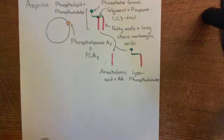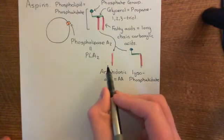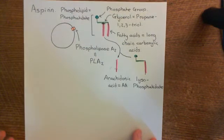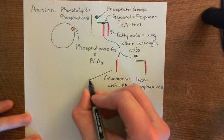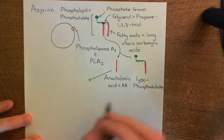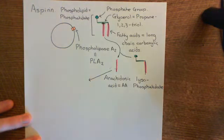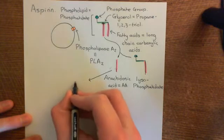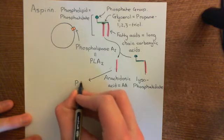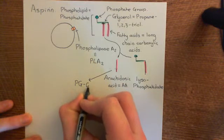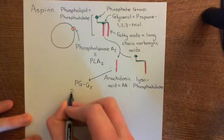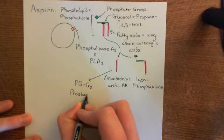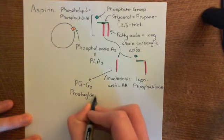Inside the platelets, arachidonic acid is going to be used to make thromboxane A2. What's first going to happen is that an enzyme known as cyclooxygenase is going to act on arachidonic acid. Cyclooxygenase enzymes catalyse two reactions of arachidonic acid — firstly the conversion of arachidonic acid into prostaglandin G2, often abbreviated to PGG2.